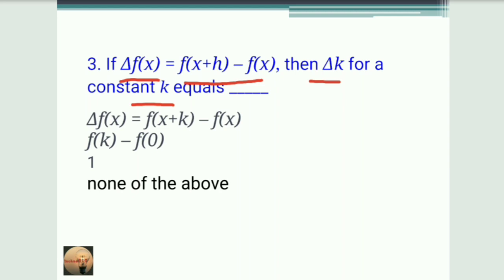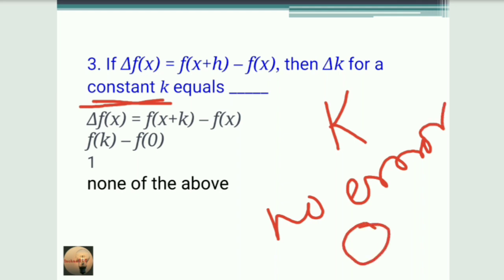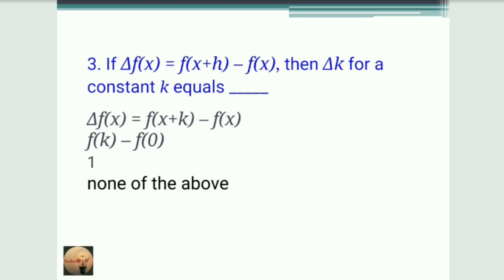Since k is a constant, it is a fixed value — there should be no error, so it is error-free. The error will be zero. According to the options, the correct answer is 'none of the above,' since zero is not listed as a direct option.